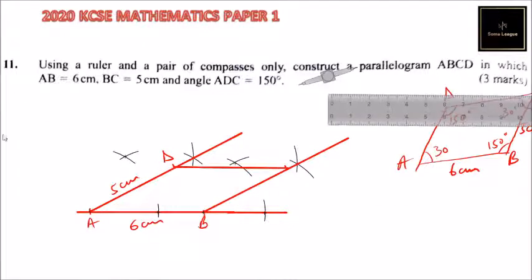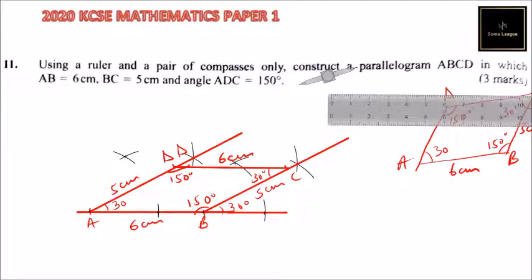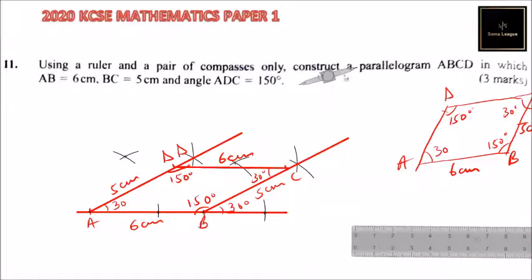You can say this is A, B, C, and D. This angle is 30 degrees, so since we have constructed angle 30, it means this angle is 150 degrees, and this angle here is also 150 degrees. Here we have 5 cm and here we have 6 cm. That's how you go about it, and using your geometrical instruments you should be able to do it faster than when using a computer. So that's how you do that question.